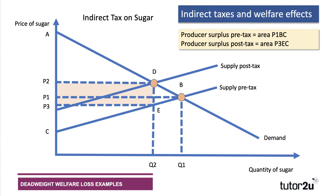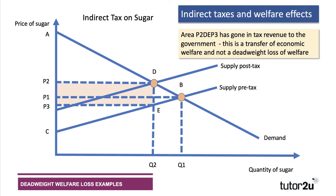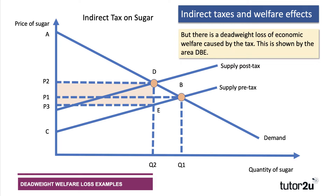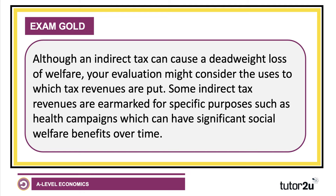That leaves us with a triangle: D B E. The area P2 D E P3 has gone as tax revenue to the government — this is a transfer of welfare to the government, not a deadweight loss. However, there is a deadweight loss of welfare shown by the triangle D B E. The reason is that quantity has fallen from Q1 to Q2, the price consumers pay has gone up, and the price the producer keeps has gone down. So there is a deadweight loss of economic welfare due to the tax.